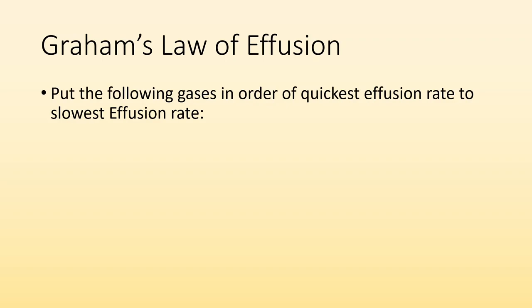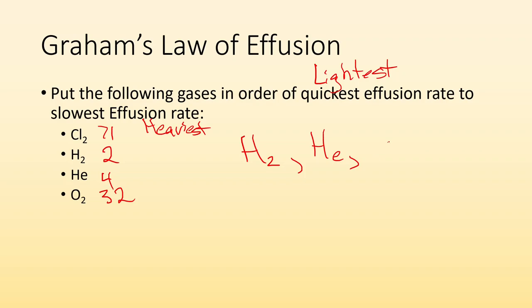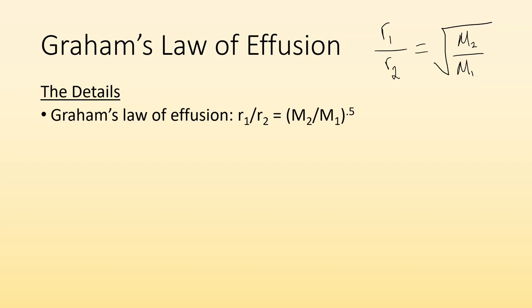All right so put the following gases in order of quickest effusion rate to slowest effusion rate. So quickest is going to be the lightest and the slowest is going to be the heaviest. So we really just need to look up what are the molar masses for this. H2 is something like 2. Helium is 4. Oxygen is 32 and I think chlorine is roughly like 70-ish, 71 maybe. So which one's going to effuse the quickest? It's going to be H2. It's the lightest one and then the next lightest one would be helium and the next lightest one would be O2 and the heaviest one would be Cl2. So the quickest to effuse would be H2, slowest Cl2.